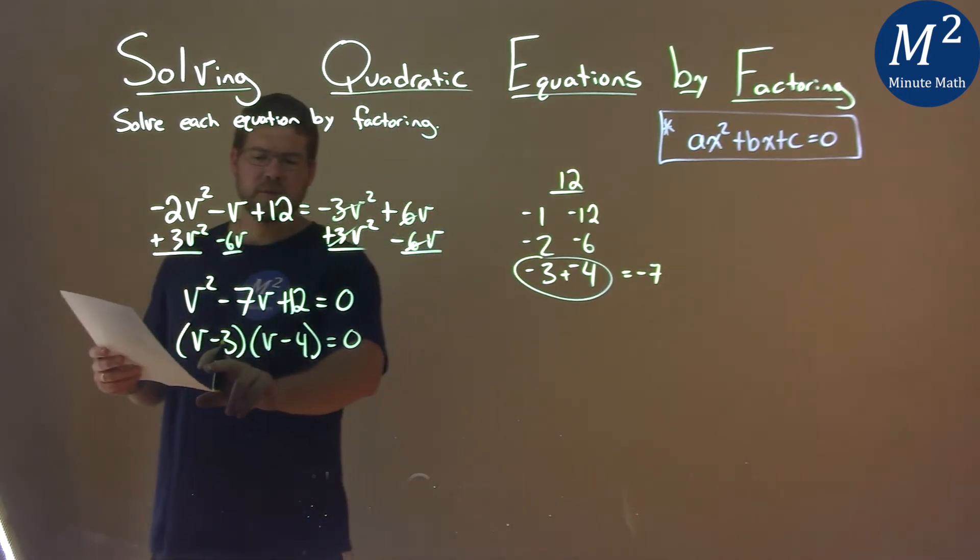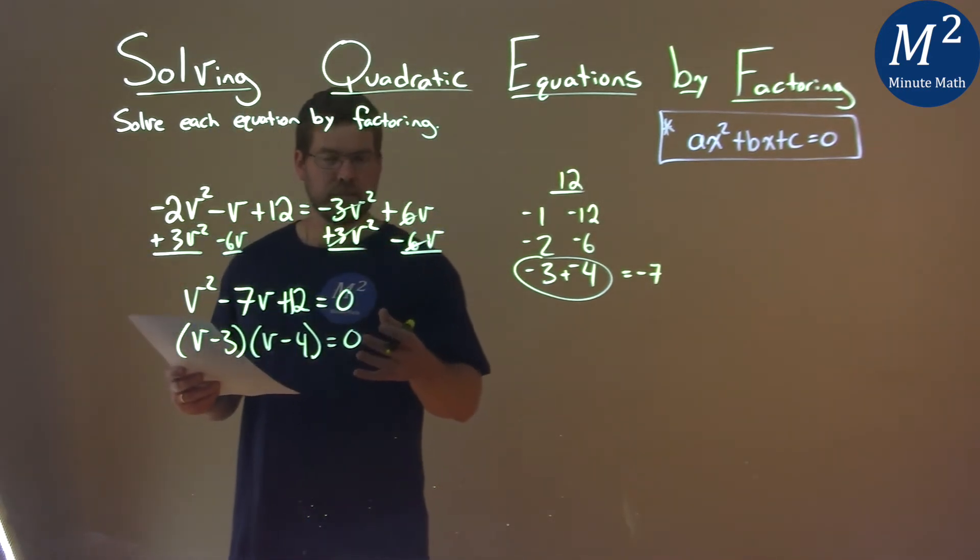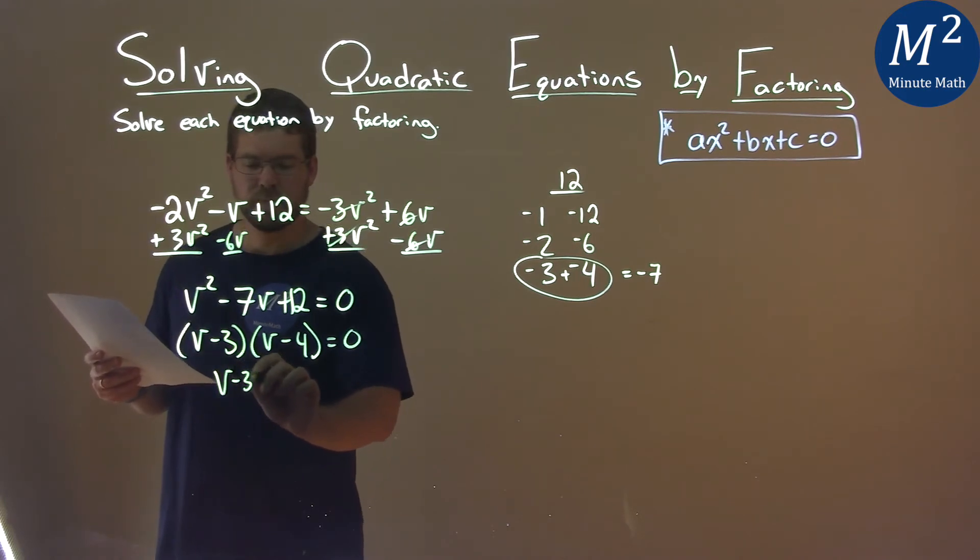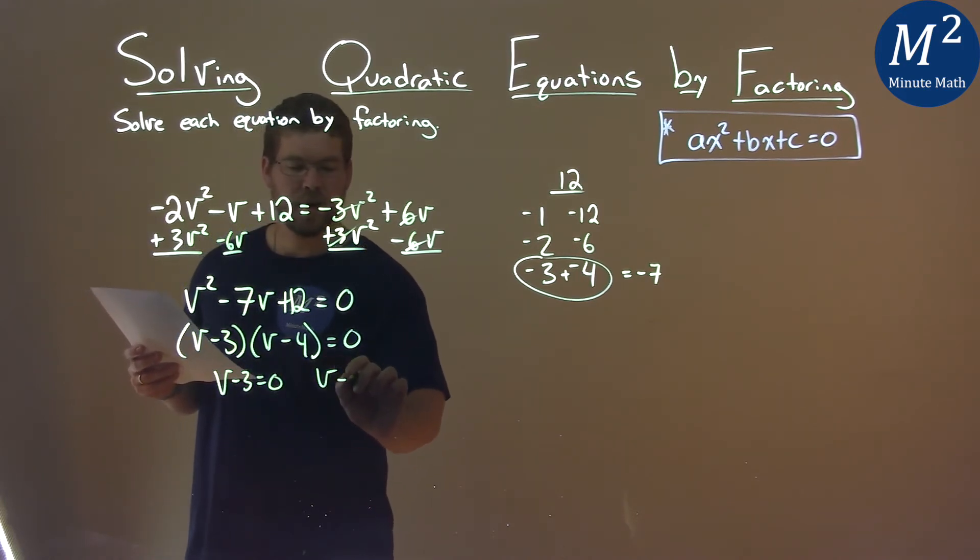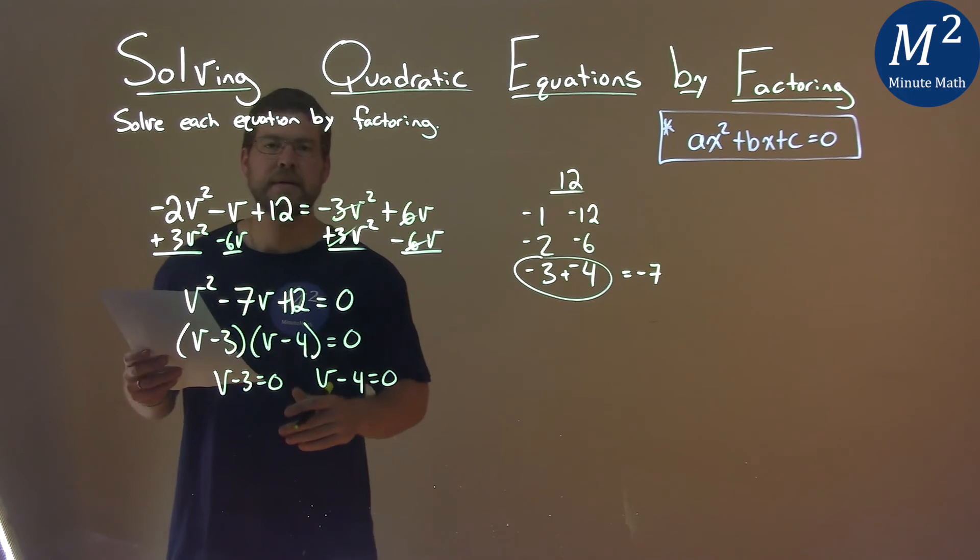We now want to solve each of these parentheses individually. So we set v - 3 = 0, and then v - 4 = 0, and let's solve.